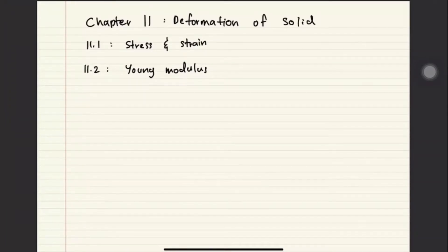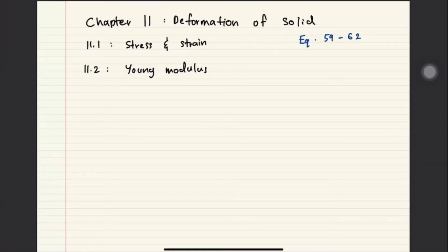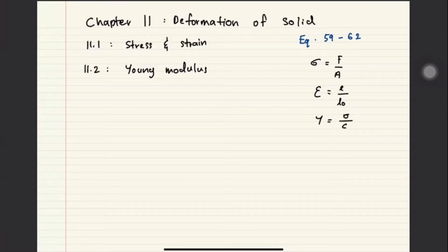For this chapter, if you are referring to the formula sheet, you basically have four formulas only, which is equation 59 until 62. So you have sigma equals to F over A, epsilon equals to E over L-naught, Y equals to sigma over epsilon, and lastly U equals to half F times E. Most of the calculations will come from subtopic 11.2 and subtopic 11.1.